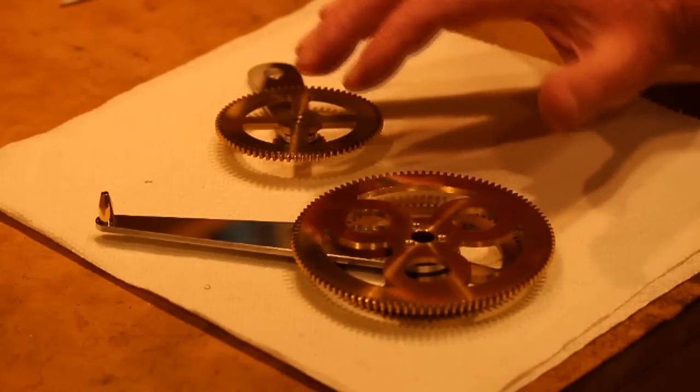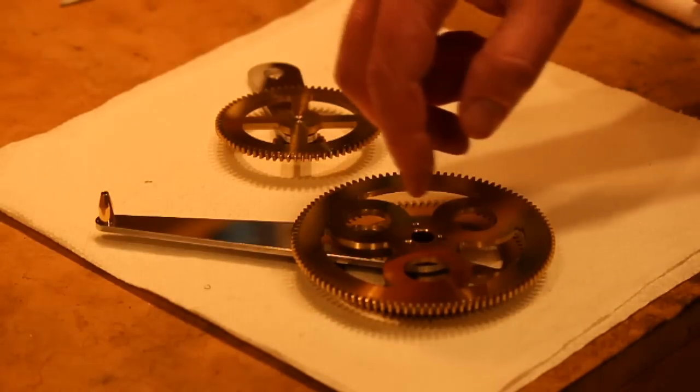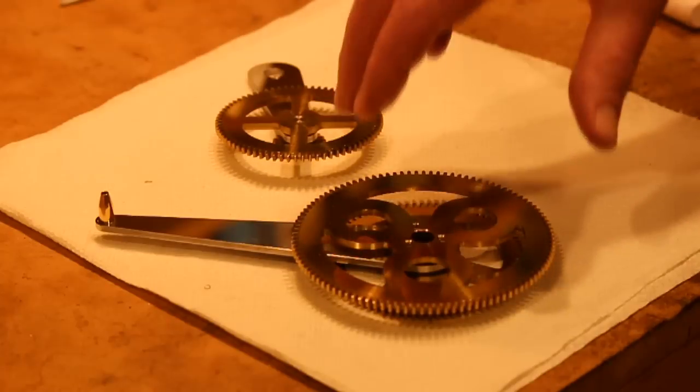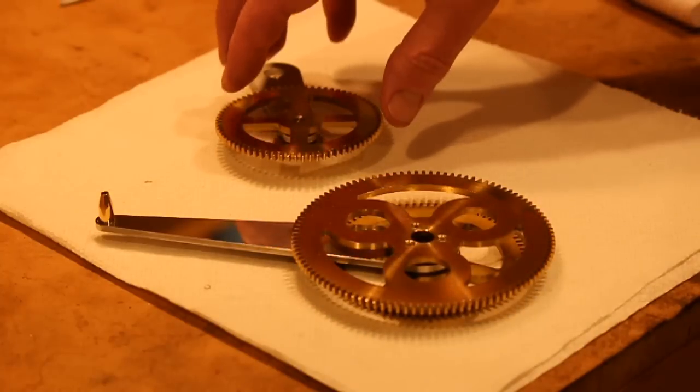Each level in the orrery, when I say level I mean the control of an individual planet, consists of two assemblies.